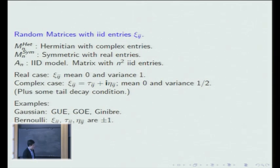And we will assume that the entries have normal mean and variance, zero and one. In many theorems we will need some extra tail decay condition. I will just ignore them as they are technical, but you can check the papers. So the examples to keep in mind: for the Gaussian is the GUE, the GOE for Hermitian and symmetric, and the Ginibre for the IID model. And another one, which is my favorite, is the Bernoulli matrices, where the entries are just plus minus one, probability half.